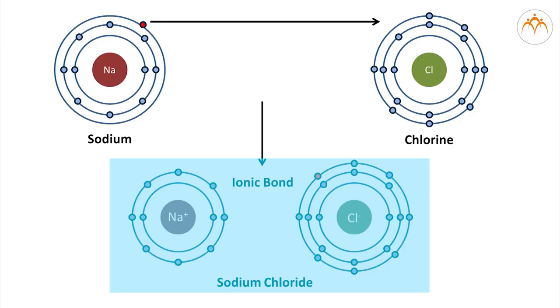The compounds formed by the transfer of electrons from metal to nonmetal are known as ionic compounds. Cations are positively charged ions and anions are negatively charged ions. Being oppositely charged, there is an electrostatic force of attraction between them. This force of attraction between cation and anion is called the ionic bond.